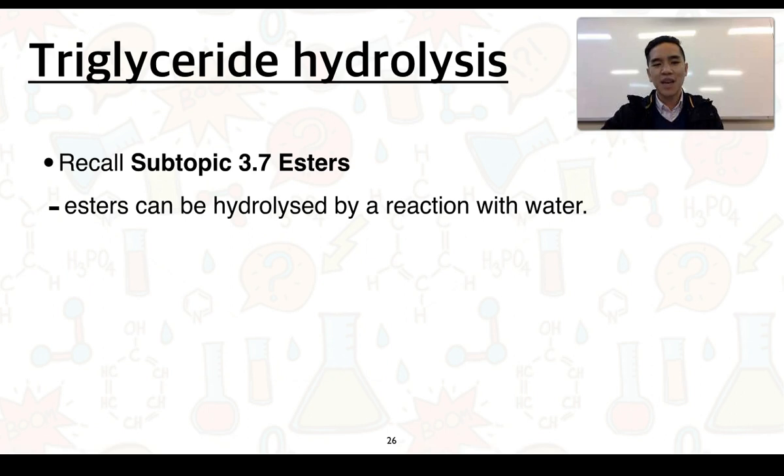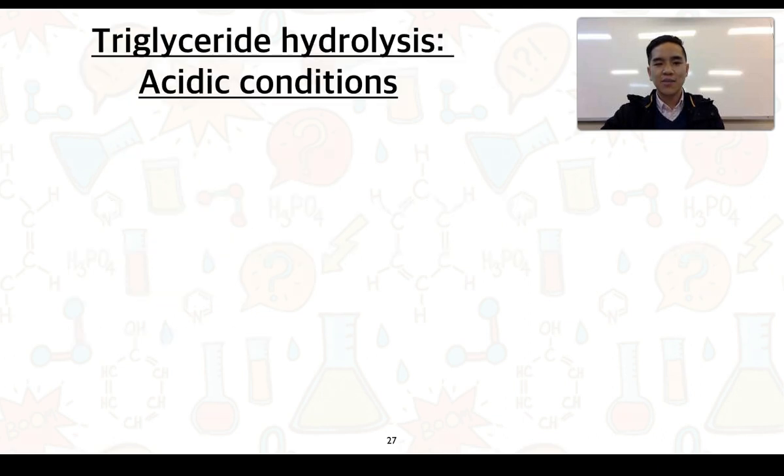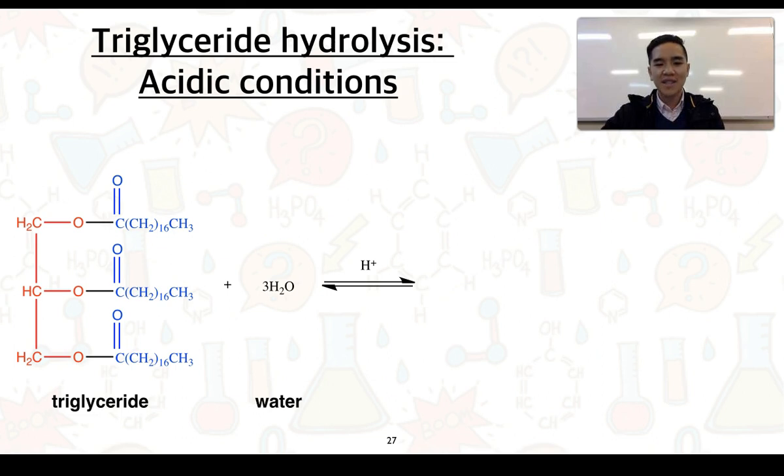Because triglycerides can be classified as esters, we know that esters themselves can be hydrolyzed through a reaction with water. This hydrolysis can occur under two types of conditions, that is, acidic conditions, as well as alkaline conditions. In regards to acidic conditions, we'll have the presence of acid. So we can see here the presence of H+. We know that the addition of water is going to help break the bonds that were formed to produce our ester.